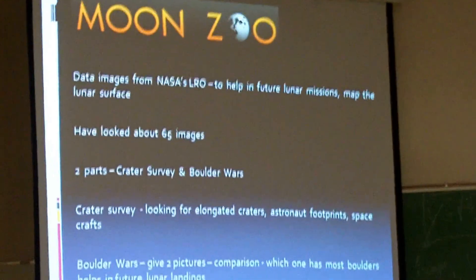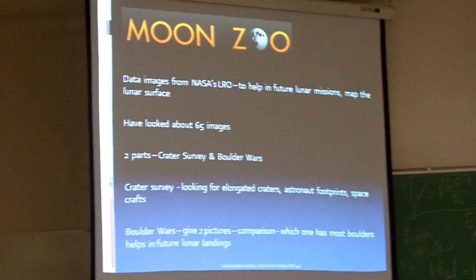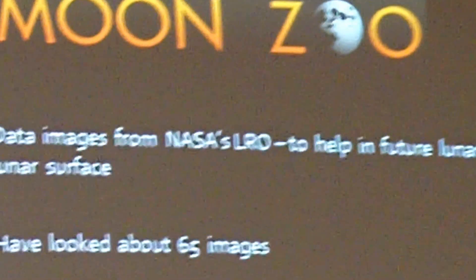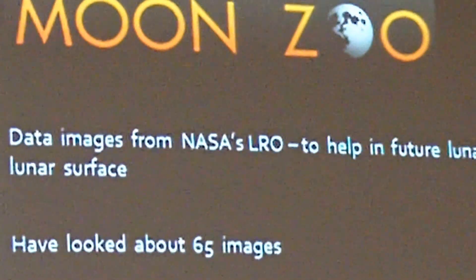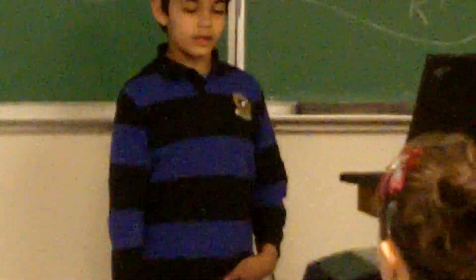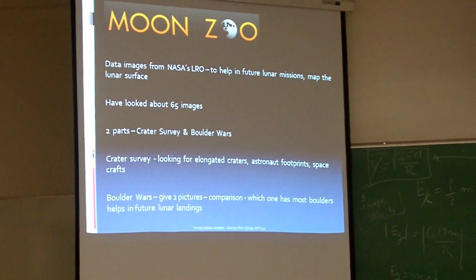One project part of Zooniverse is Moon Zoo. The images come from NASA's Lunar Reconnaissance Orbiter, whose mission is to help in future lunar landing missions and to map the surface of the moon. I have looked through about 65 images. There are two parts of Moon Zoo: Crater Survey and Boulder Wars. Crater Survey is where we get images and look for craters, boulders, etc. Boulder Wars is where we compare two pictures and see which one has more boulders. The goal is to help in future lunar landings.